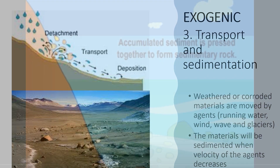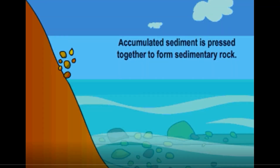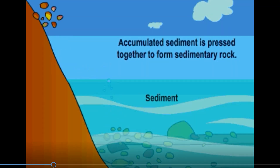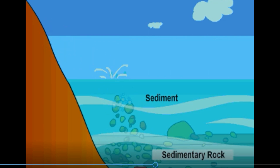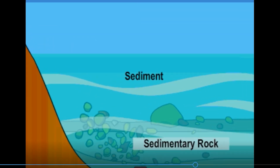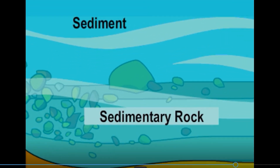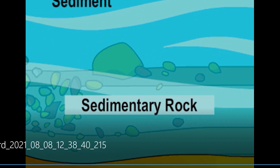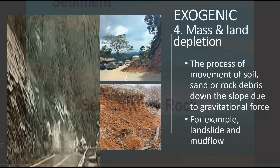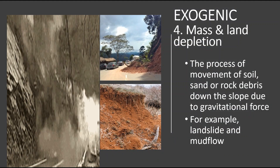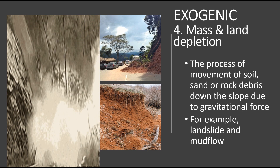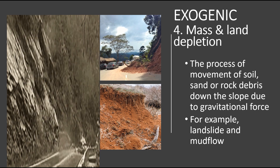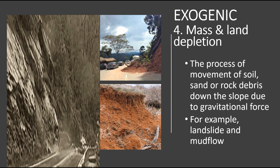As you can see, sedimentary rock is formed when the eroded materials are sedimented as the velocity of water decreases. Another example of exogenic process is mass and land depletion, which is a process of movement of soil, sand, or rock debris down a slope due to gravitational force.